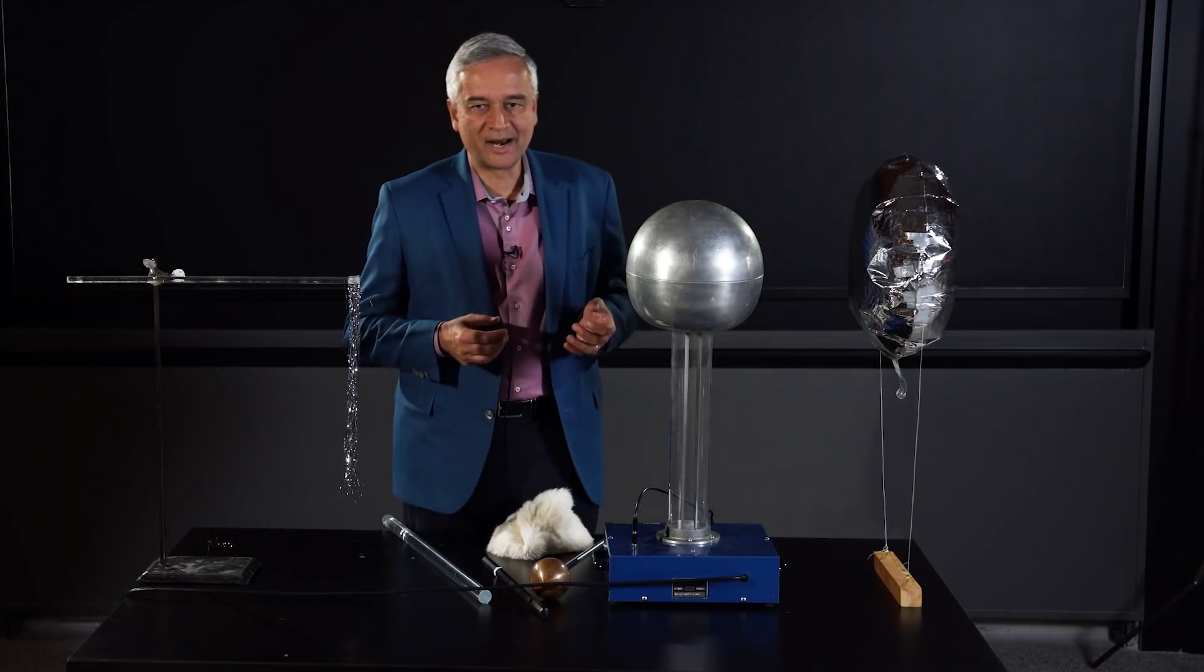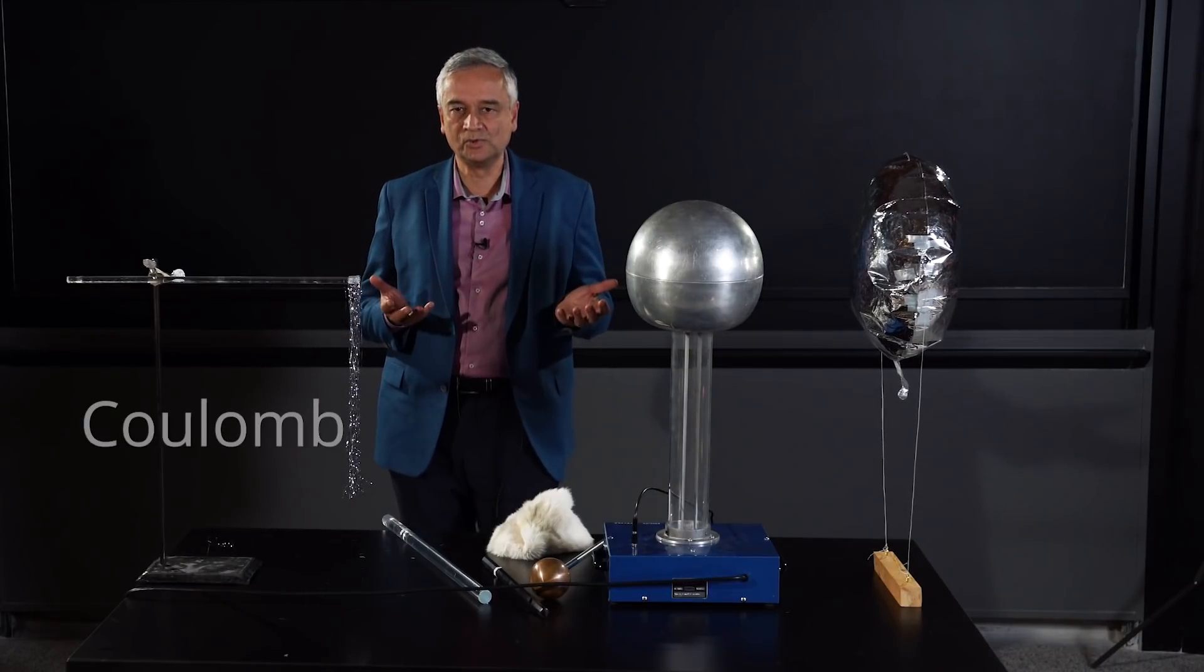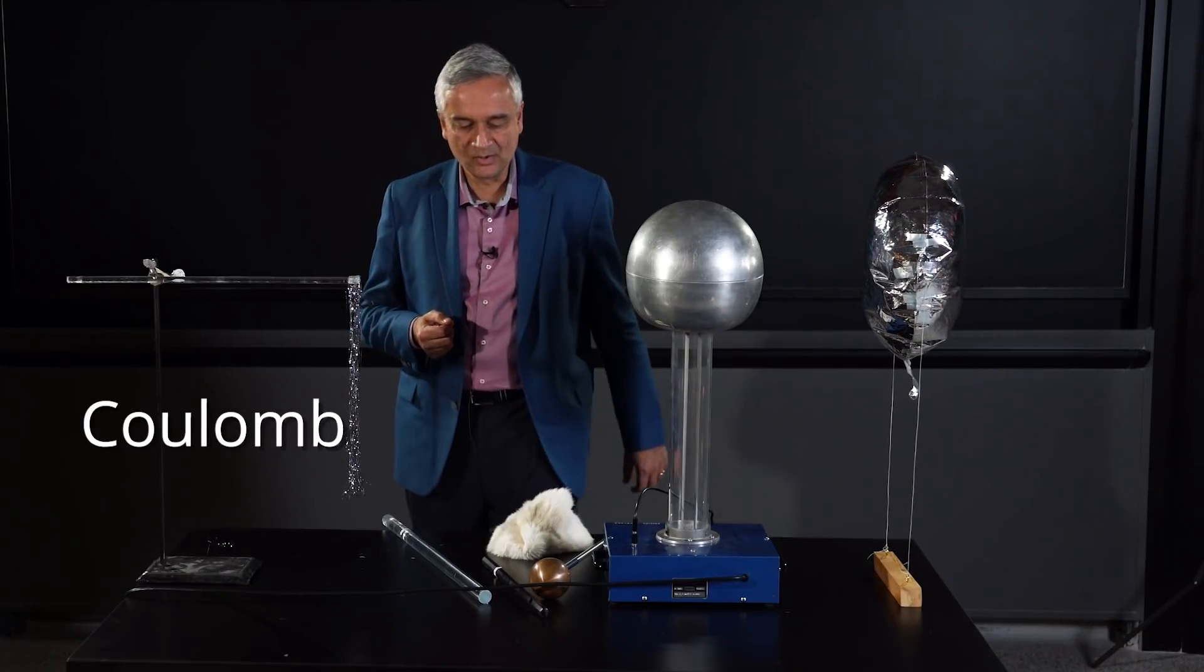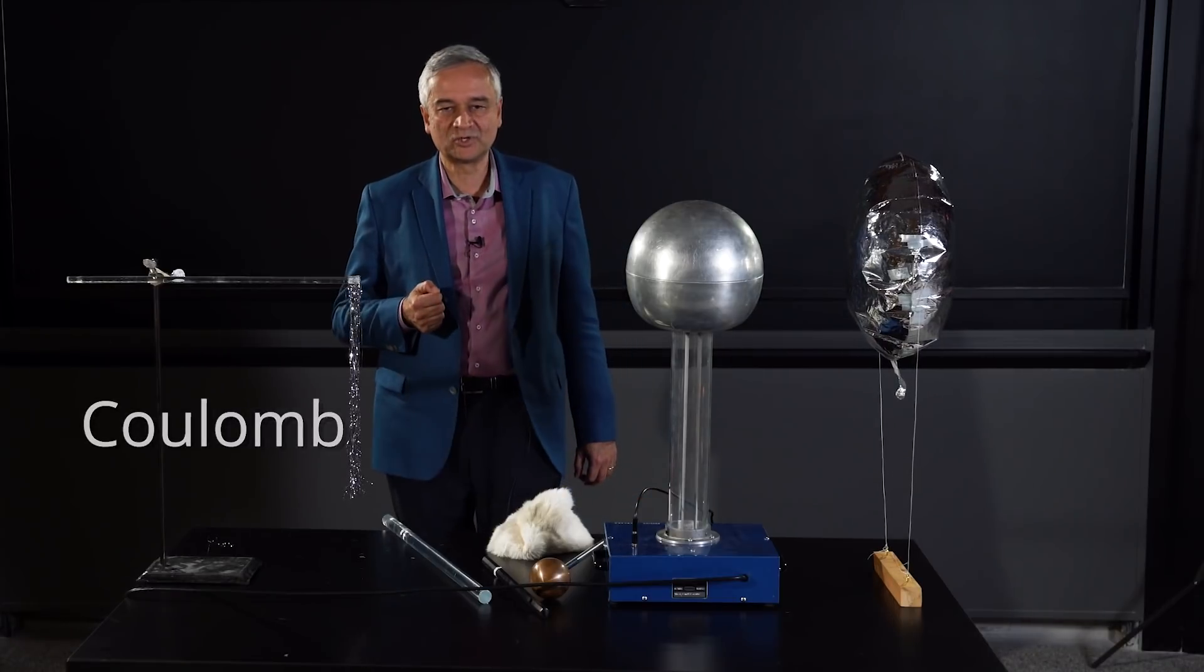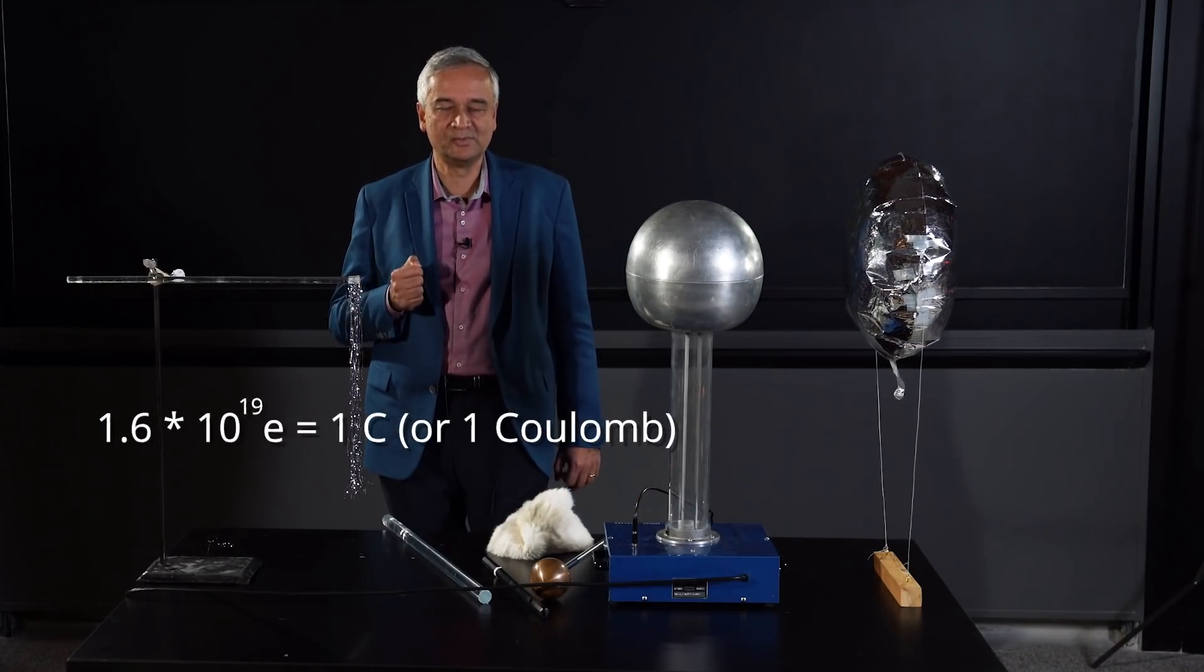We'll do more quantitative things later, but what are the units of charge? Well the unit of charge is called the Coulomb and you can tell that the Coulomb is a very big amount of charge because it takes 1.6 times 10 to the 19 electrons to make one Coulomb of charge.